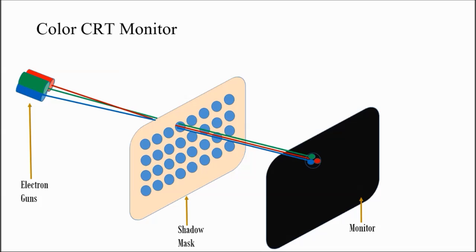In color monitors, the front side is coated with three coatings. One is related to red, one is green and one is blue. In color monitors we are using three electron guns. Each gun, one is for red phosphorus, one is blue and one is for green.